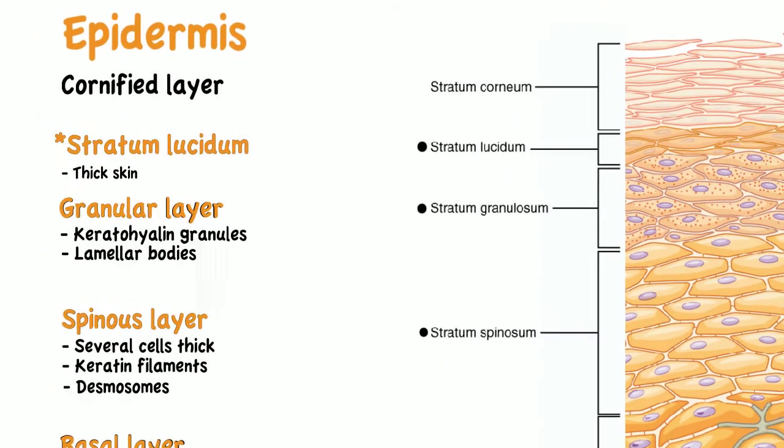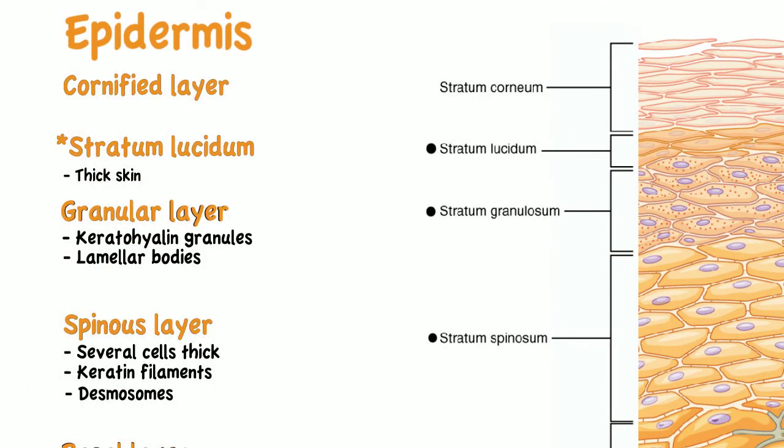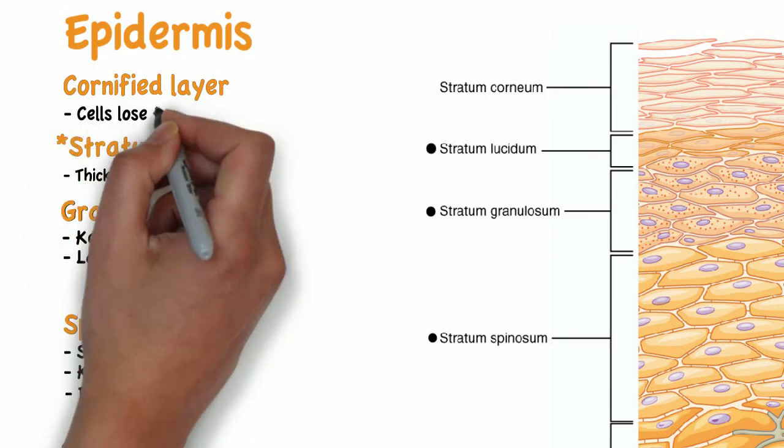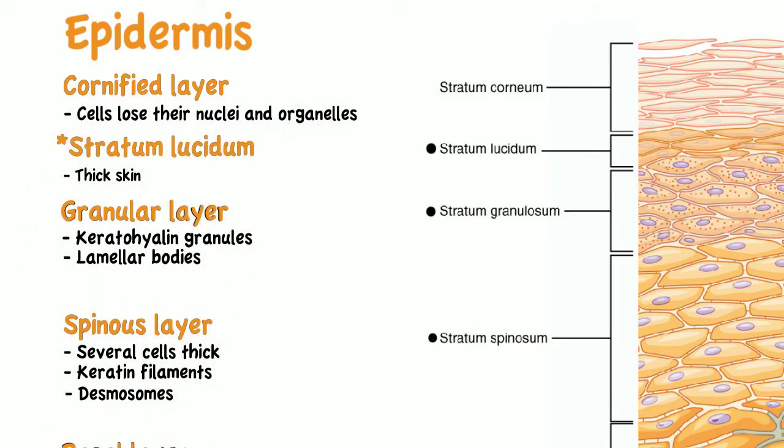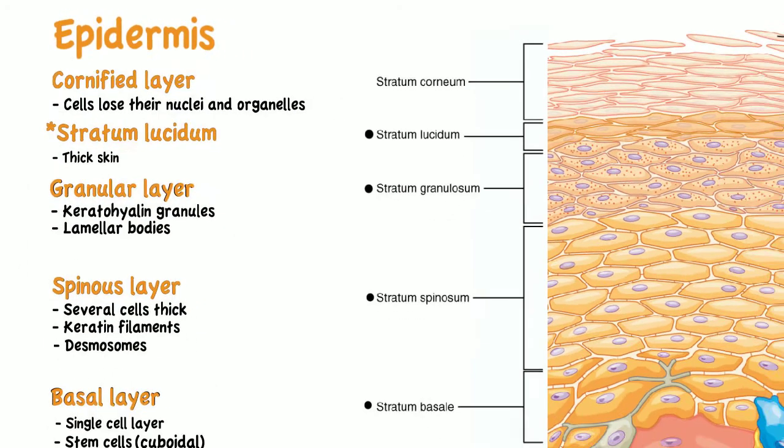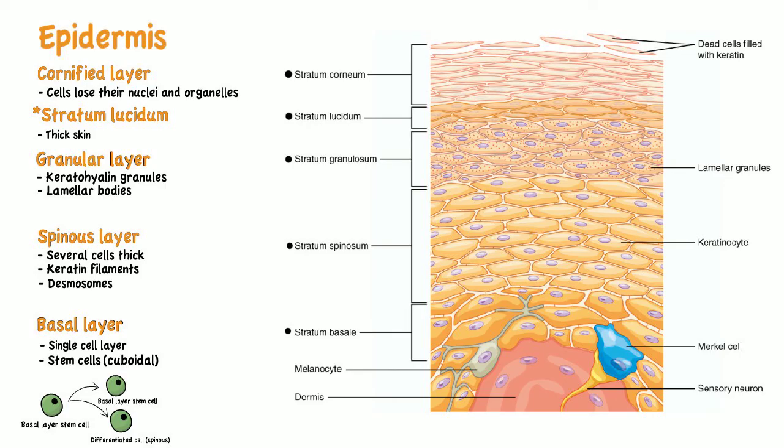The last layer is the cornified layer. In this layer, cells lose their nuclei and organelles to form the tough surface layer of skin. Eventually the dead cells fall apart and are shed.